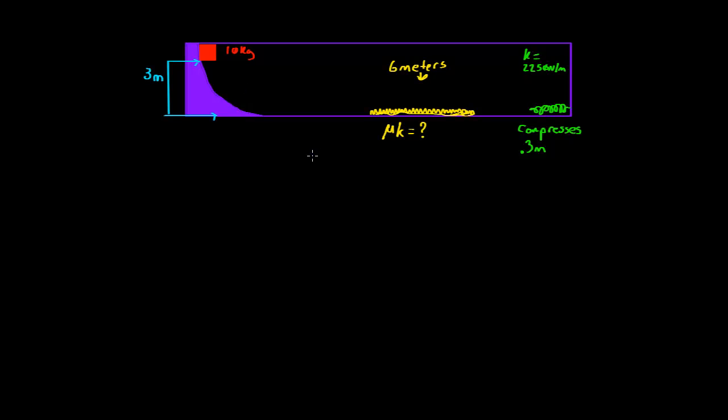So first we're going to have to figure out what the gravitational potential energy of this block is. The gravitational potential energy is going to be your 10 kilogram block times gravity, which is 9.81 meters per second squared, times the height, and so it's 3 meters up. And that's going to give you 294.3 joules. So we know that the potential energy at this point is 294.3 joules.